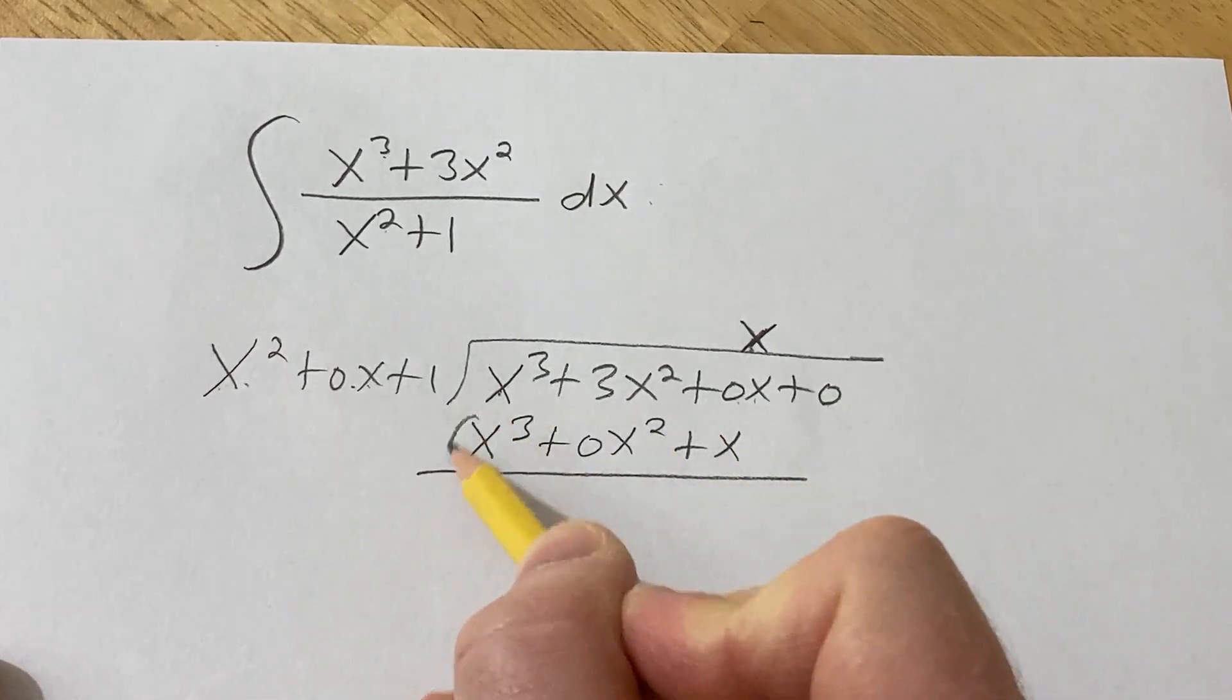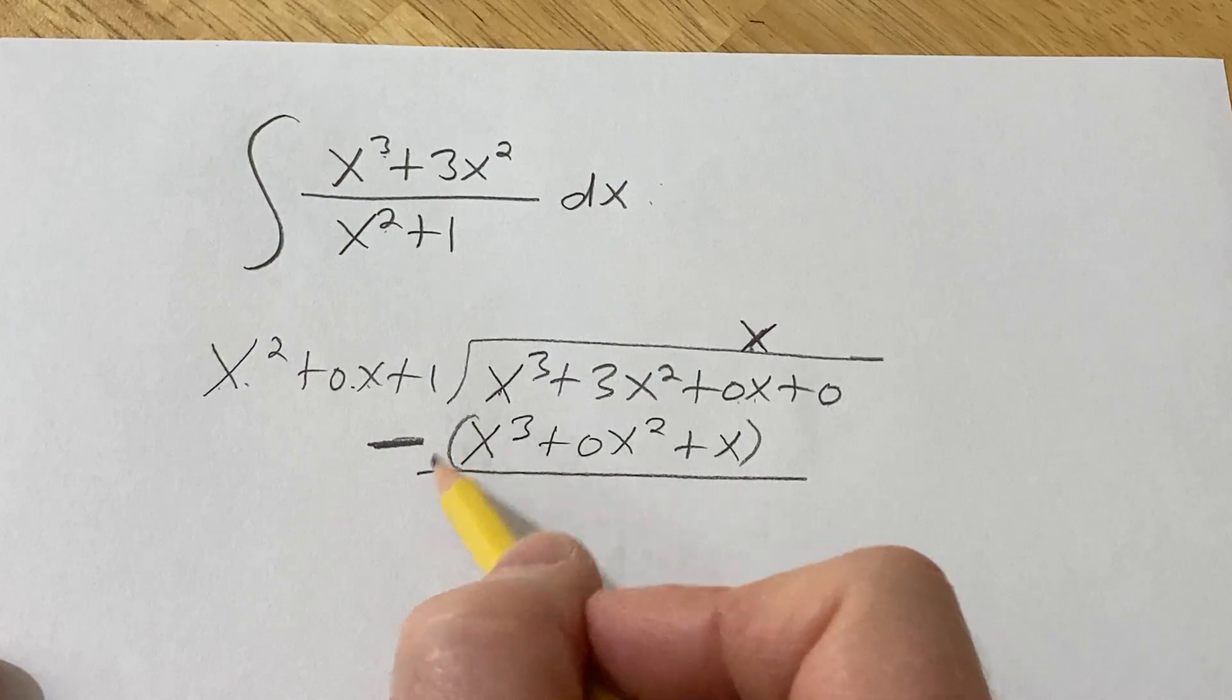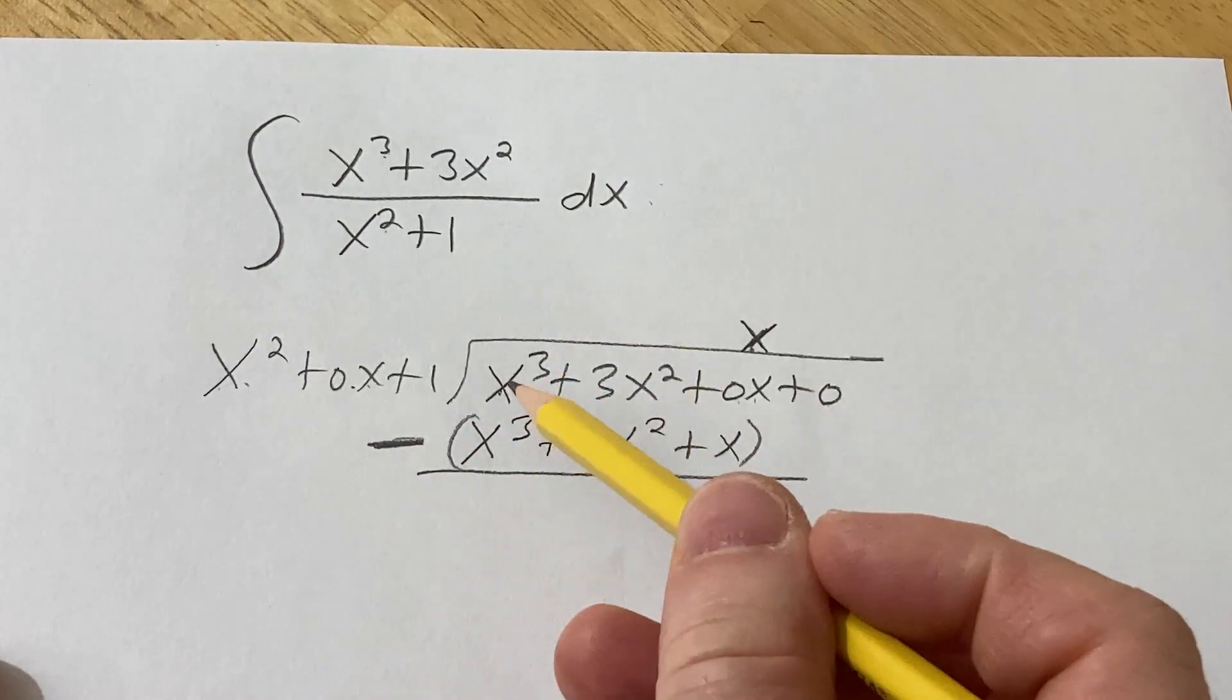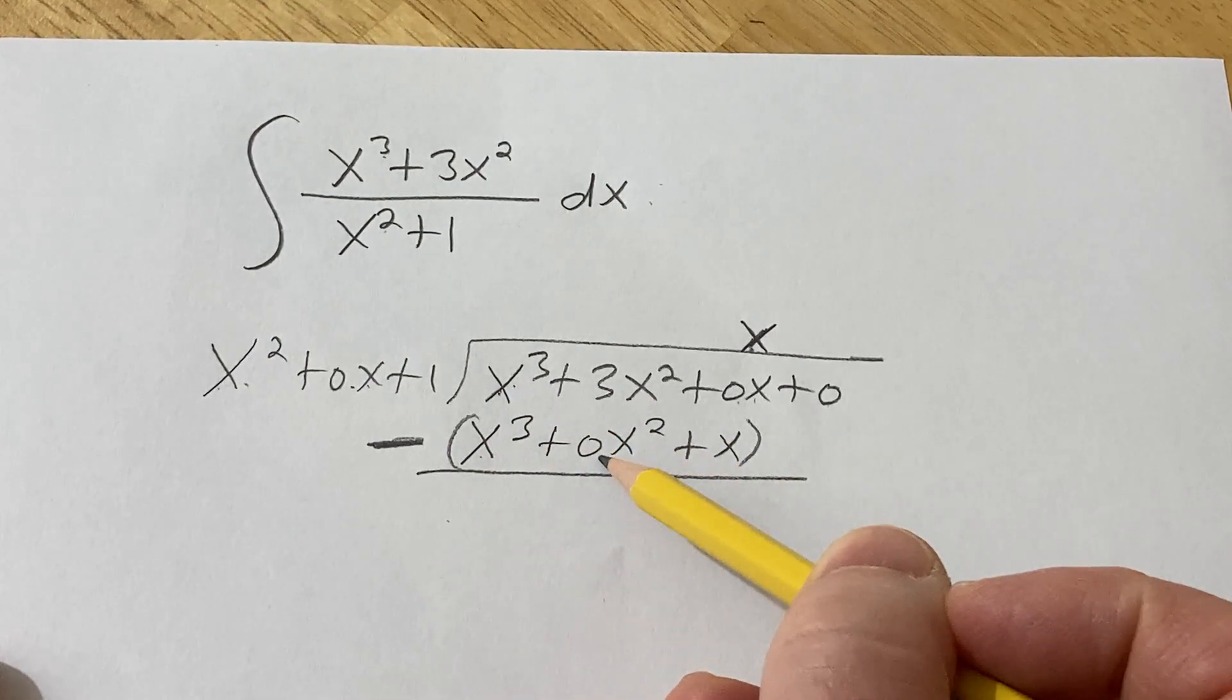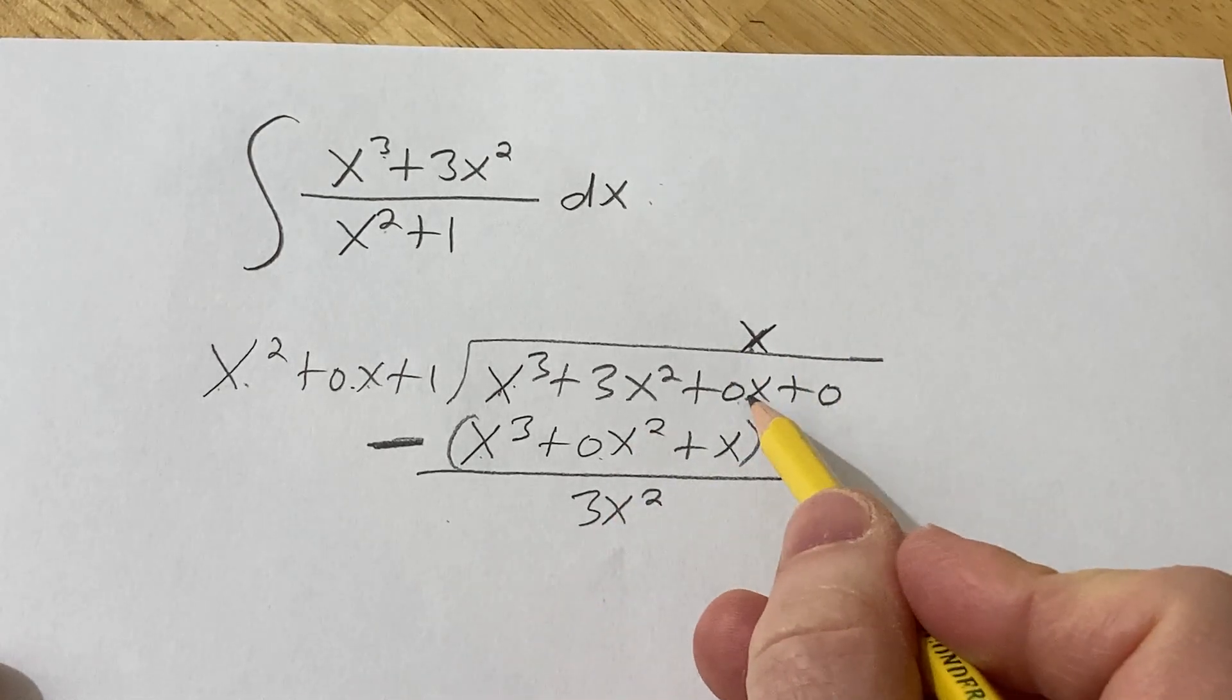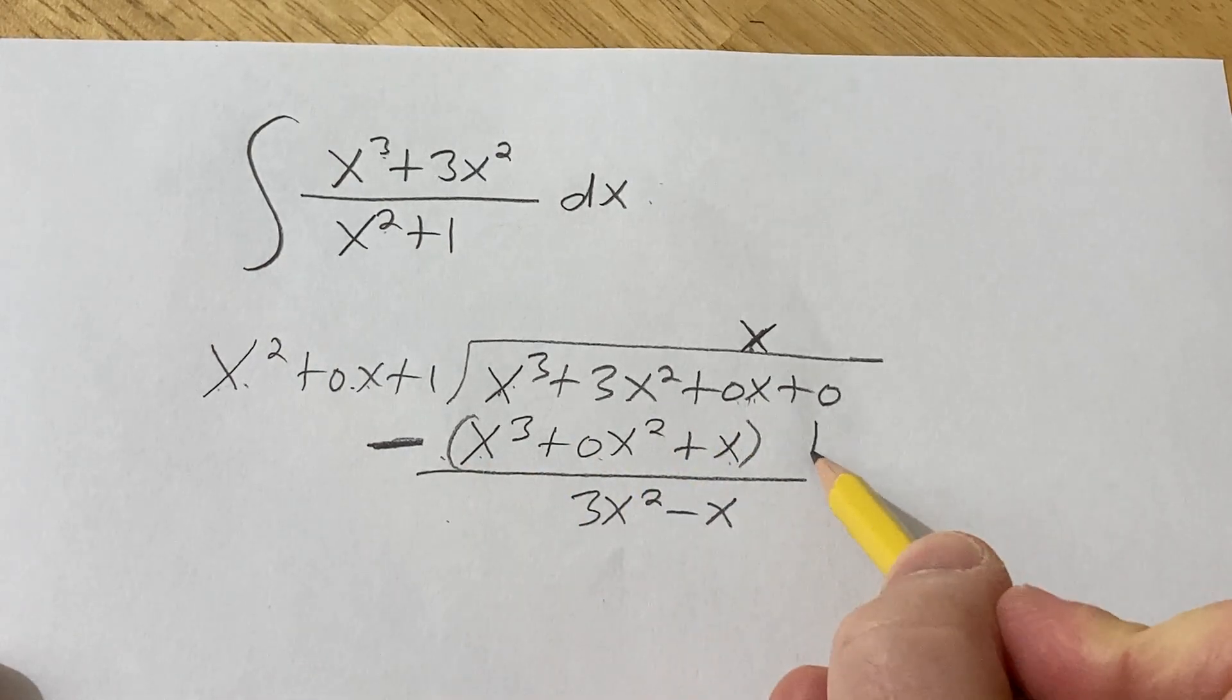And I like to draw a line. And then I put a parenthesis and a giant minus sign. And then you're basically distributing the negative 1 here and adding. So it's x cubed plus negative x cubed, so that's 0. 3x squared minus 0x squared is going to be 3x squared. And then here we're going to have a minus x. And then you bring down the 0.